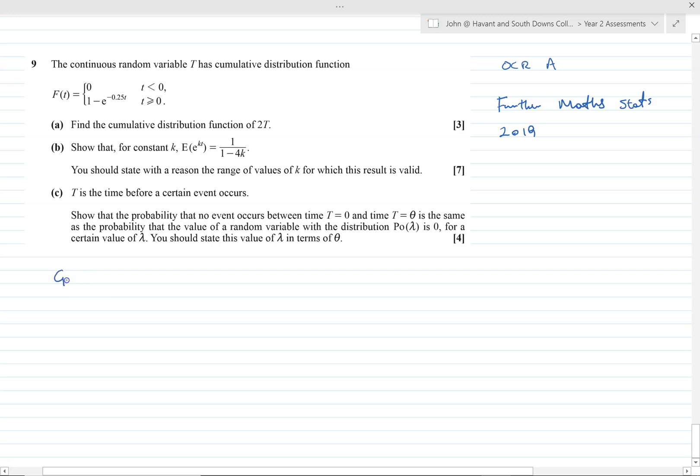In all of these, we need the cumulative function, which we've already got of the original distribution. We want to find the cumulative function of some combination, some kind of function of that. So by definition of the cumulative function, we want to find whatever function that is represented by that. We arrange this to make t the subject.